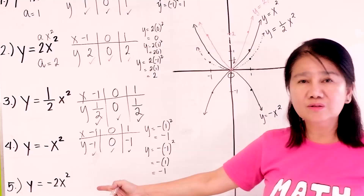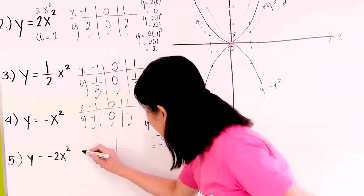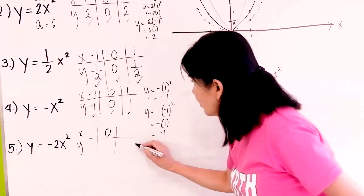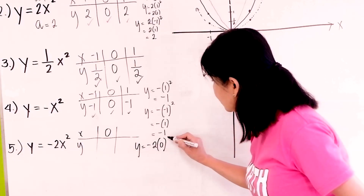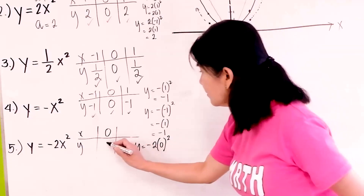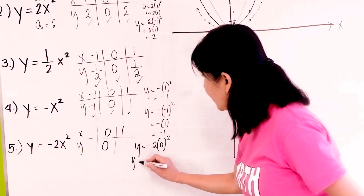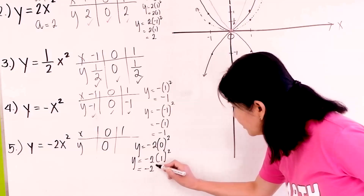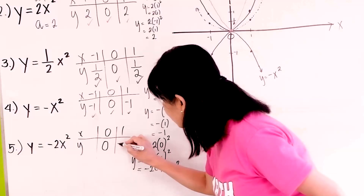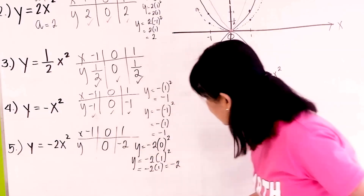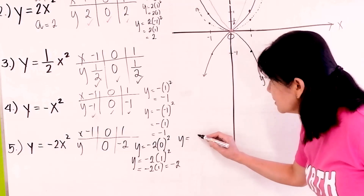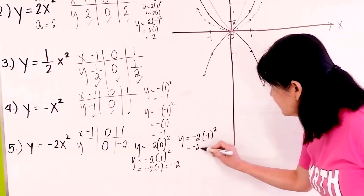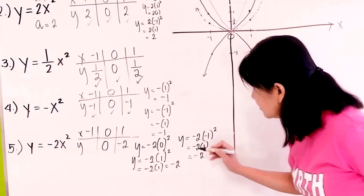Now let's proceed to number 5. Again, we have to have the table of values for x and y. When x is 0, y equals negative 2 times 0 squared — whatever you multiply by 0 gives you 0. When x is 1, y is negative 2 times 1 squared, giving us negative 2 times 1 is negative 2. So this is negative 2.